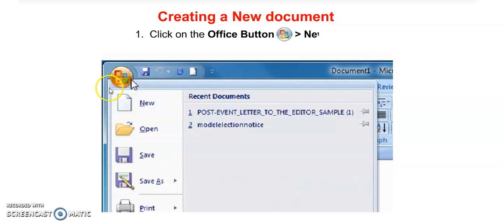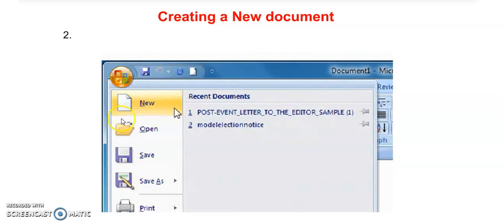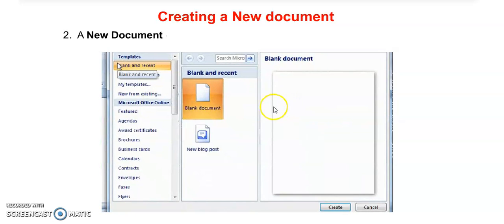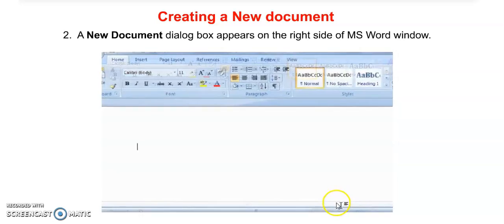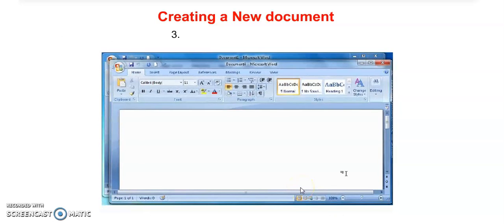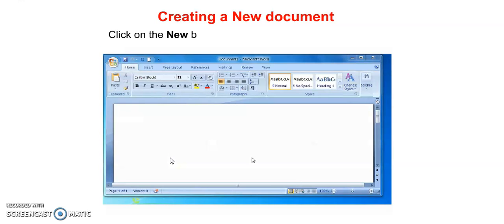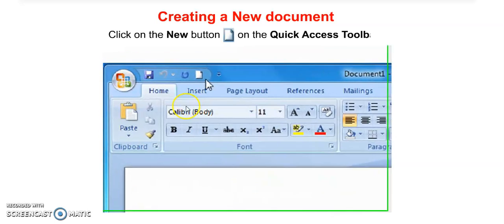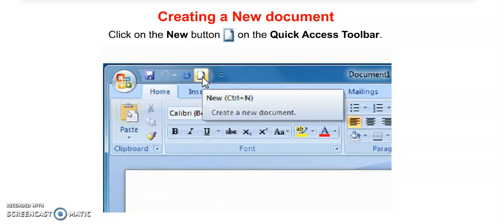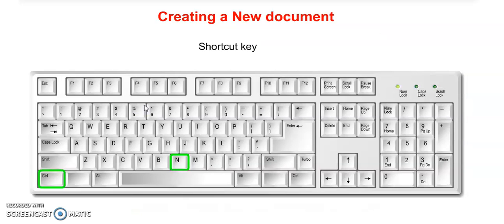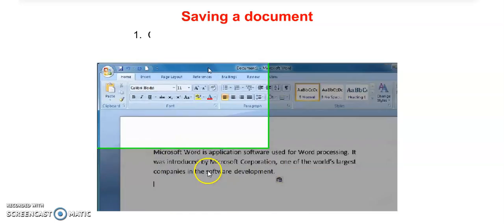Next, how can we create a document in MS Word? Click on the Office button and click on the New option. A New Document dialog box will appear. On the right side of the MS Word window, click on the Create button and select the blank document. You can also create a new document from the Quick Access toolbar, or press Ctrl+N for a new document.